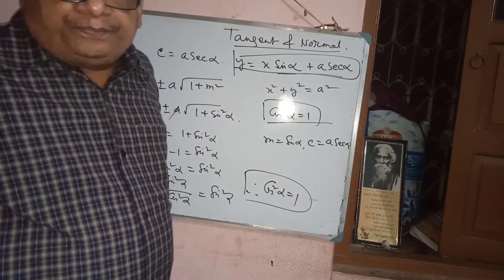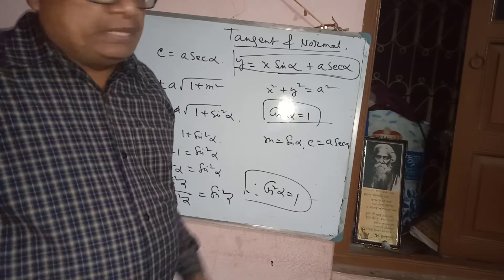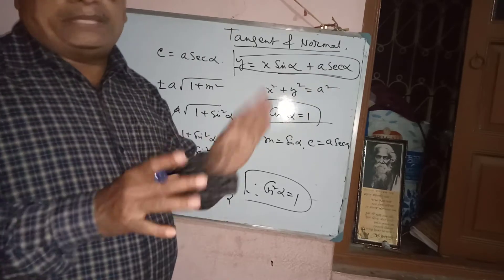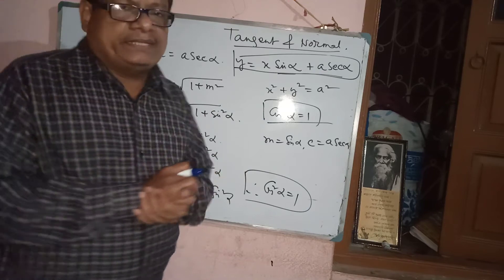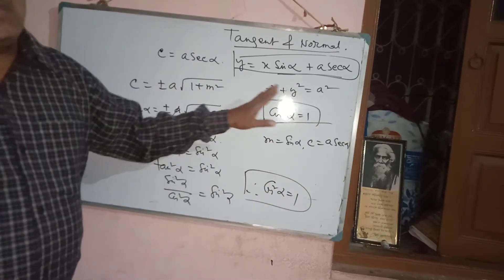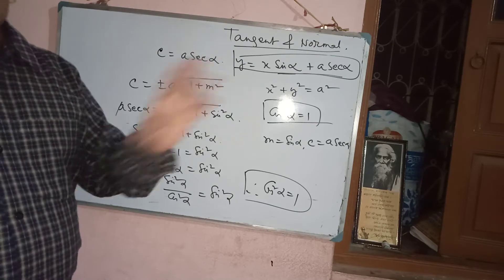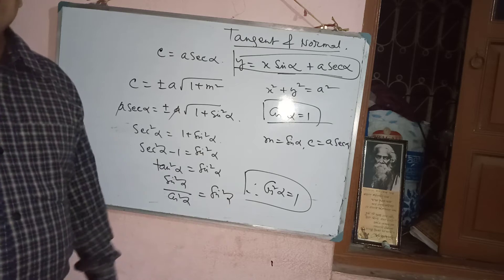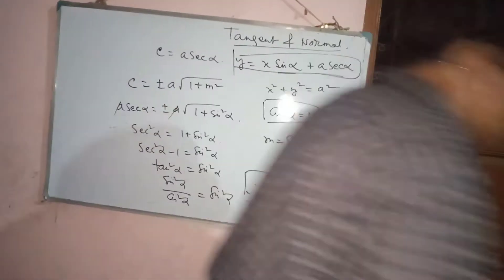Alternatively, find dy/dx and the equation of tangent at point (x₁, y₁). Since the line is given as the tangent, compare both equations — they will be identical. For x² + y² = a², the tangent is xx₁ + yy₁ = a². Compare, find x₁ and y₁, substitute back, and you will get cos²α = 1. Both methods work fine.